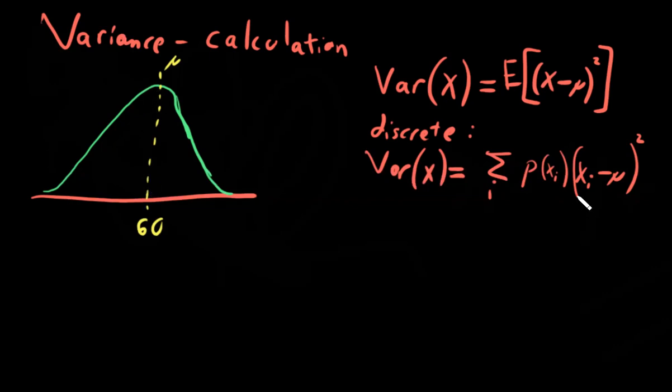And then we're going to multiply that probability based on how far away we are from the mean, but squared. And that's it, that's what variance is.